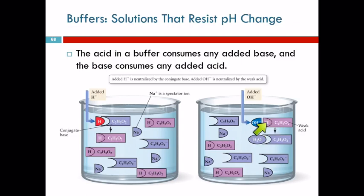The weak acid will give up its hydrogen ion to neutralize the hydroxide ion and form water, and so the pH will change very, very little. Does that make any sense at all?